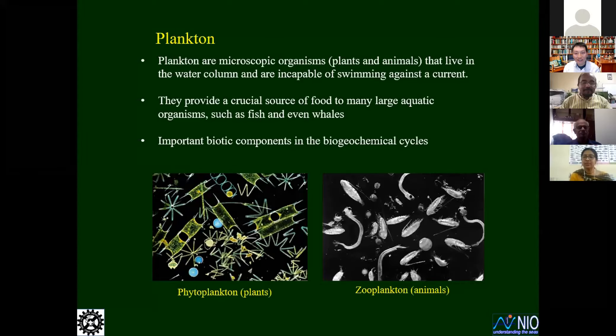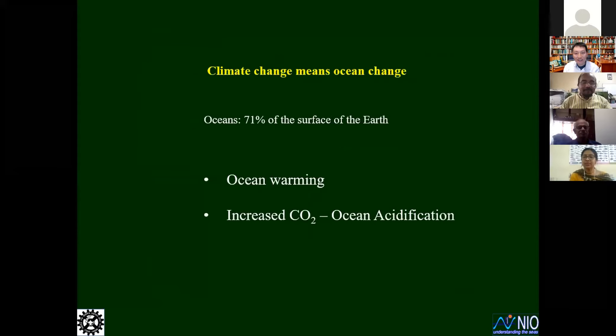Now, directly to the topic of my interest — plankton — on which I have been working for over 25 years. There are two major kinds of plankton: one is the plant component, the microscopic plant component in the ocean, phytoplankton, and the other is the animal component of the plankton. Basically, they are microscopic floating organisms in the ocean.